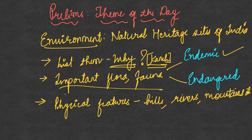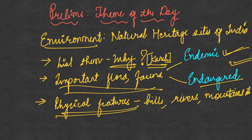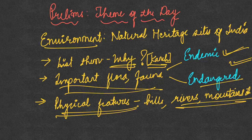You will also have to understand the important flora and fauna of these natural heritage sites, focusing particularly on any endemic, endangered, vulnerable, or critically endangered flora and fauna. You will also have to list out the important physical features present in these natural heritage sites, because UPSC often asks questions about which rivers pass through a national park or which mountains surround it — understanding location is very important.